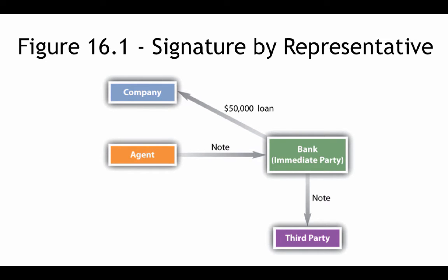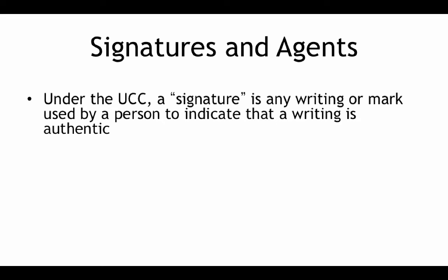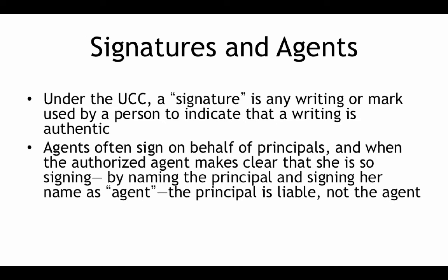One issue that comes up, in Chapter 16, Figure 16.1, is when an agent or representative signs a note. In this example, a company has an agent who signs on behalf of the company on a note given to the bank, and then that note is negotiated to a third party. What liability does not only the corporation have, but the agent for the corporation? Under the UCC, a signature is any writing or mark done by the person indicating the writing is authentic. Agents often sign on behalf of principals, and when they are an authorized agent and make it clear they're signing on behalf of the principal, then the principal is liable and the agent is not.